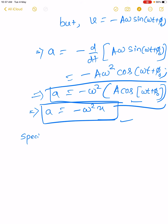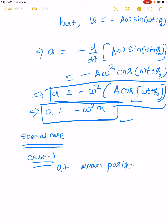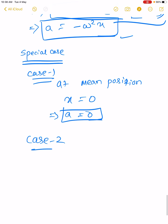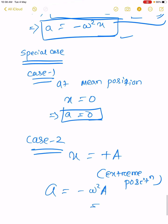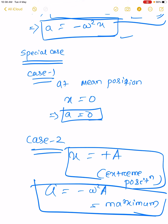For special cases of acceleration: at the mean position where x equals 0, acceleration a equals 0, but velocity is maximum. At the extreme position where x equals maximum (plus A), acceleration also becomes maximum, but velocity becomes 0.